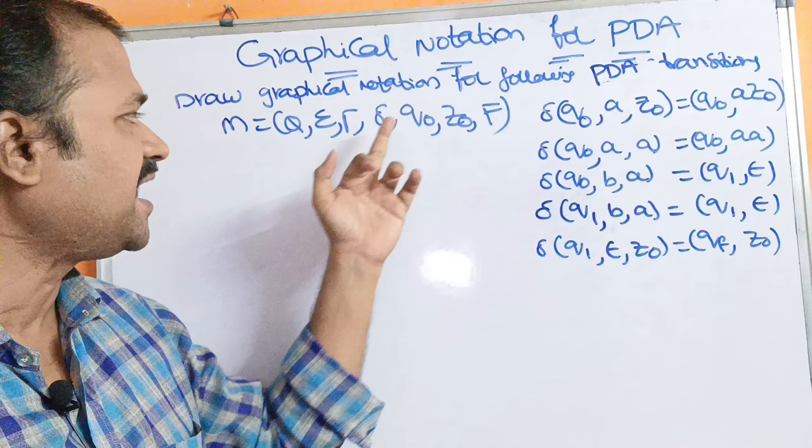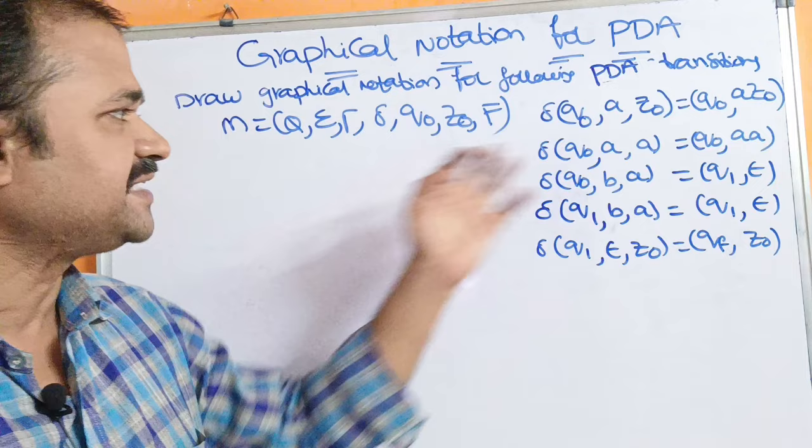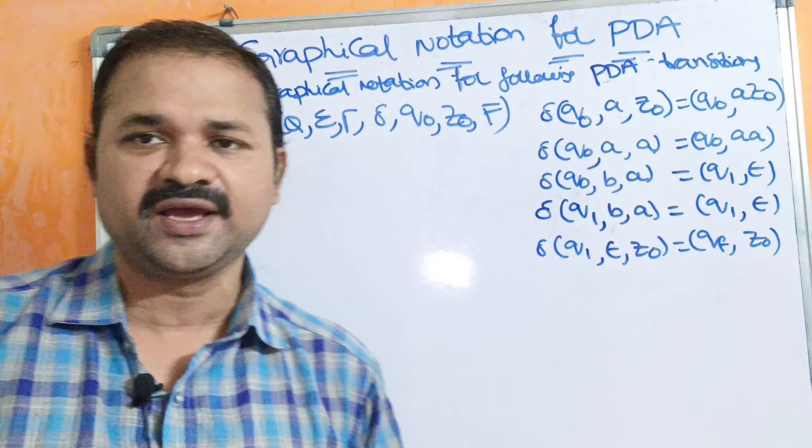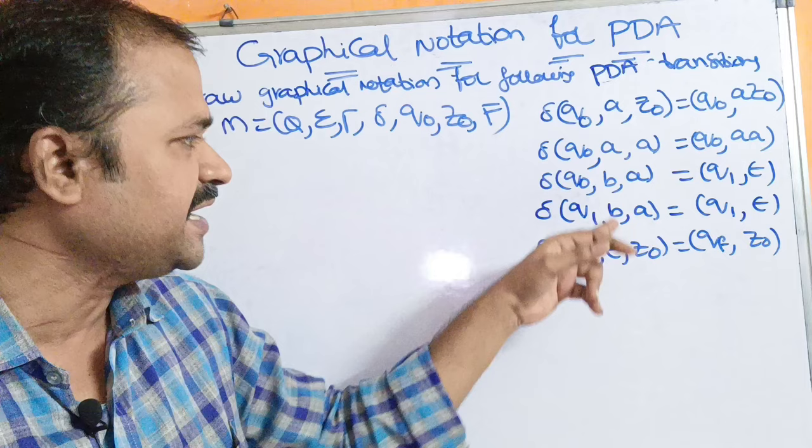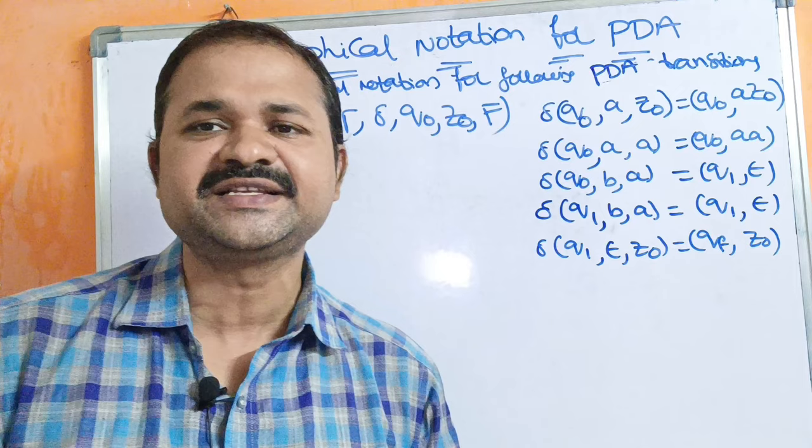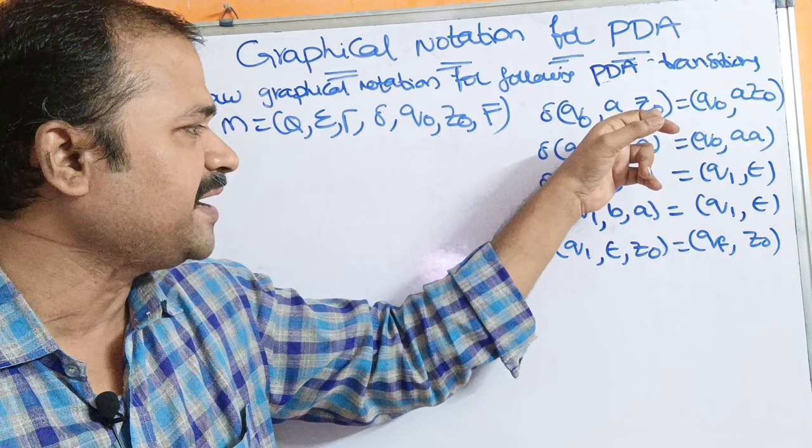Q means finite set of states. Here the states are Q0, Q1, and QF. Sigma means input alphabet — the second argument. Input alphabet here mainly contains 2 symbols: A and B. Tau means stack alphabet — the third argument. Stack alphabet mainly contains 2 symbols: Z0 and A.